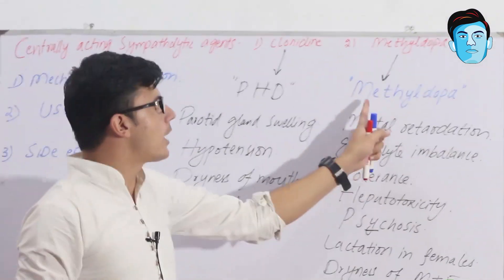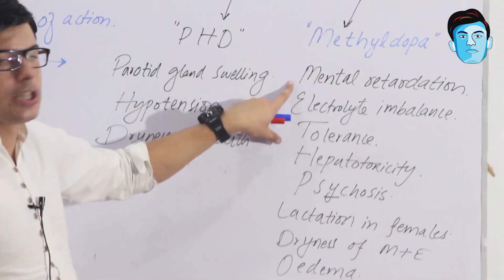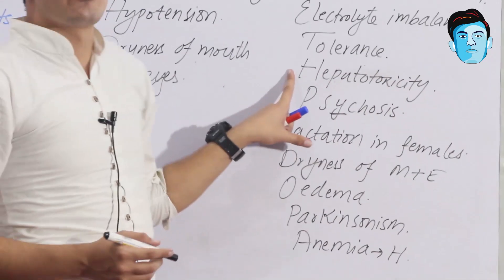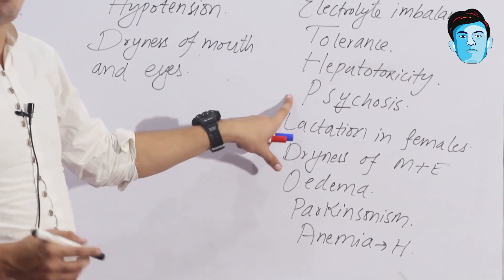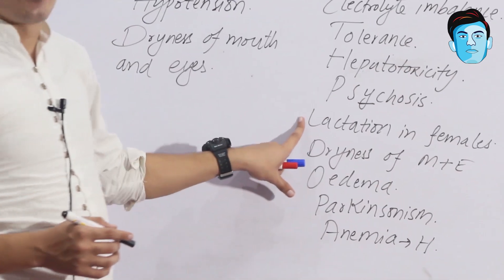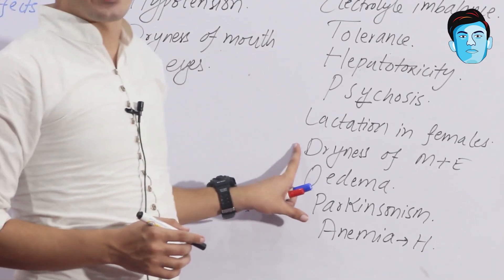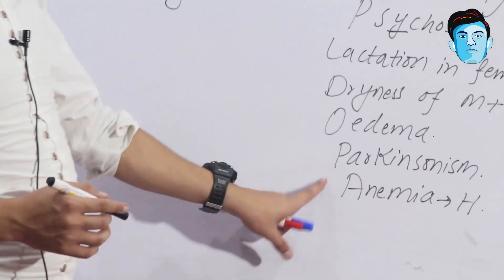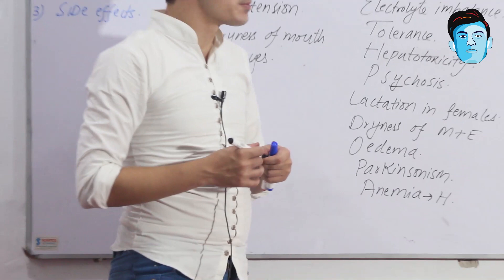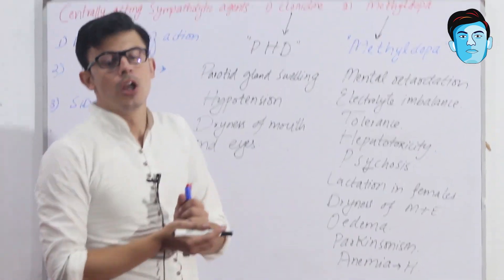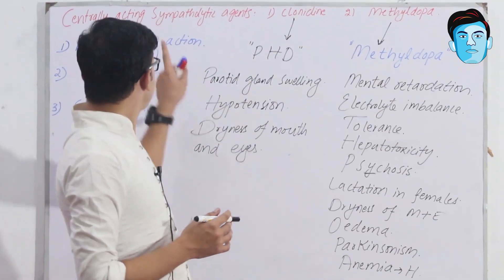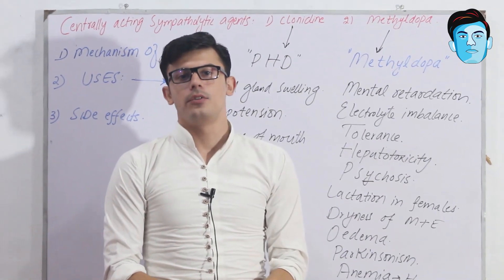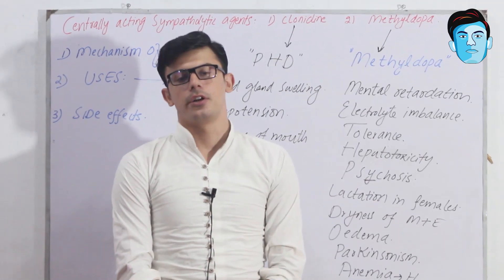To summarize the side effects of methyl dopa using METHYLDOPA: M — mental retardation, E — electrolyte imbalance, T — tolerance, H — hepatotoxicity, Y — psychosis, L — lactation in females, D — dryness of mouth and eyes, O — edema, P — Parkinsonism, A — hemolytic anemia. That covers centrally acting sympatholytic agents. Please subscribe and share with your friends. Thank you.